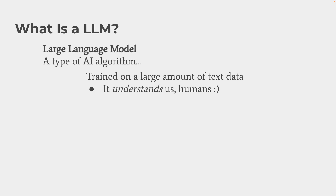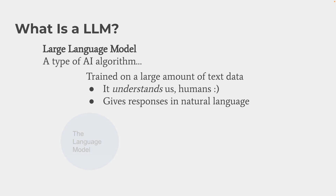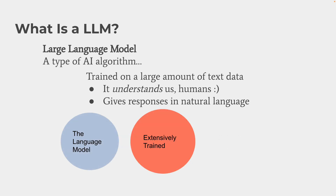The idea is that it understands us humans — though there's more to that. In general, the text it generates is human-like text based on the input it receives. We give it an input and then we receive an output — a response in a natural language. The main keywords here are that the language model is extensively trained in a natural language, so it can respond to us in languages such as English, German, Spanish, and so forth.